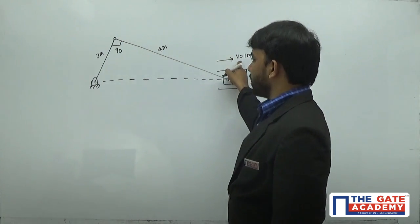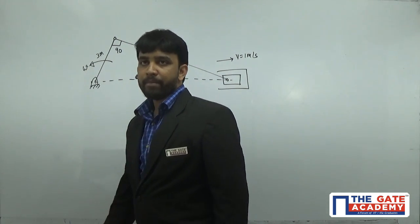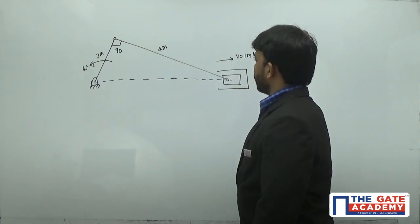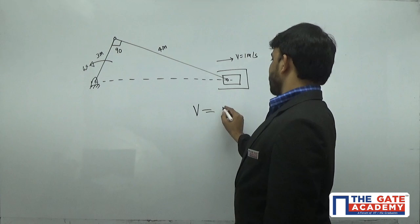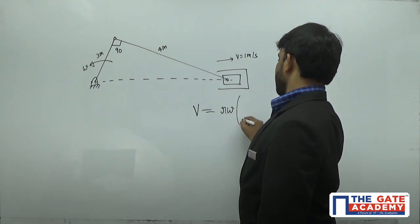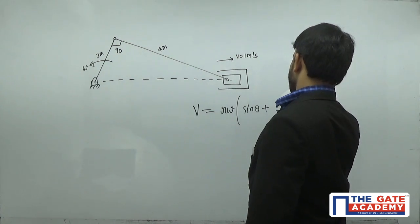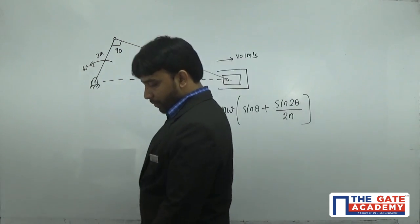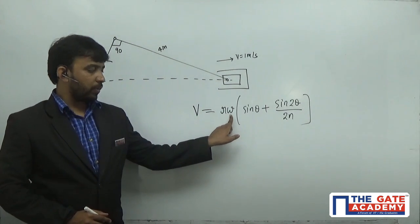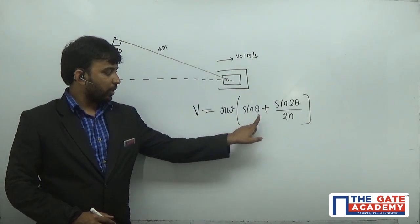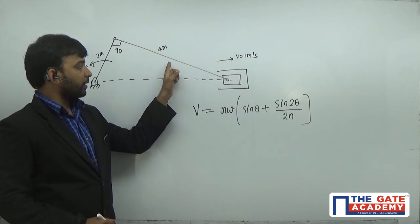At this instant, velocity of the slider is given, so what will be the velocity of the crank? From kinematic analysis, velocity of the piston is R·ω·(sin θ + sin 2θ / 2n). This is the velocity of the slider. If you know the crank angle and crank velocity, you can get the velocity of any other moving machine element — the connecting rod or the slider.